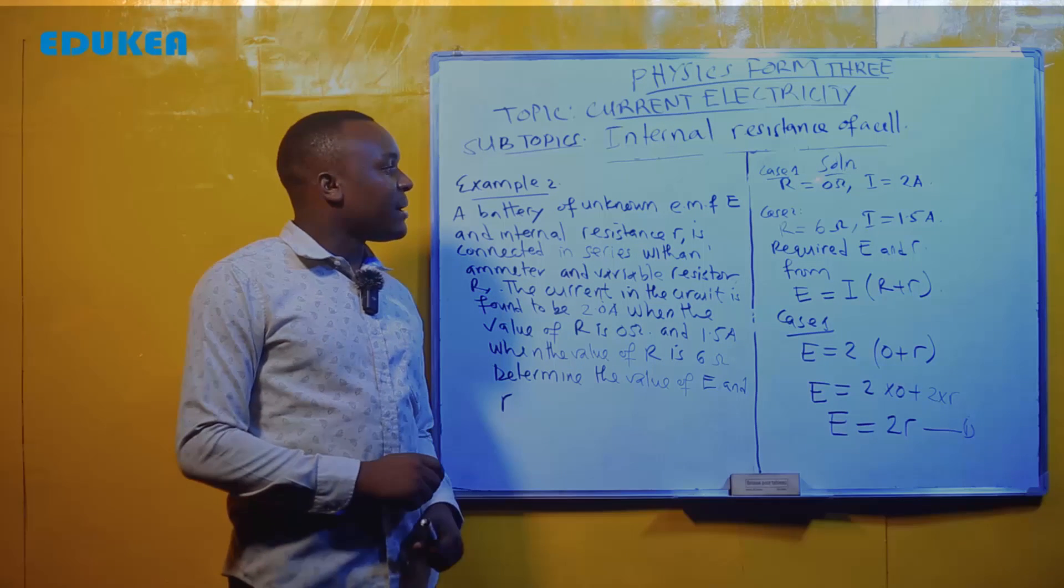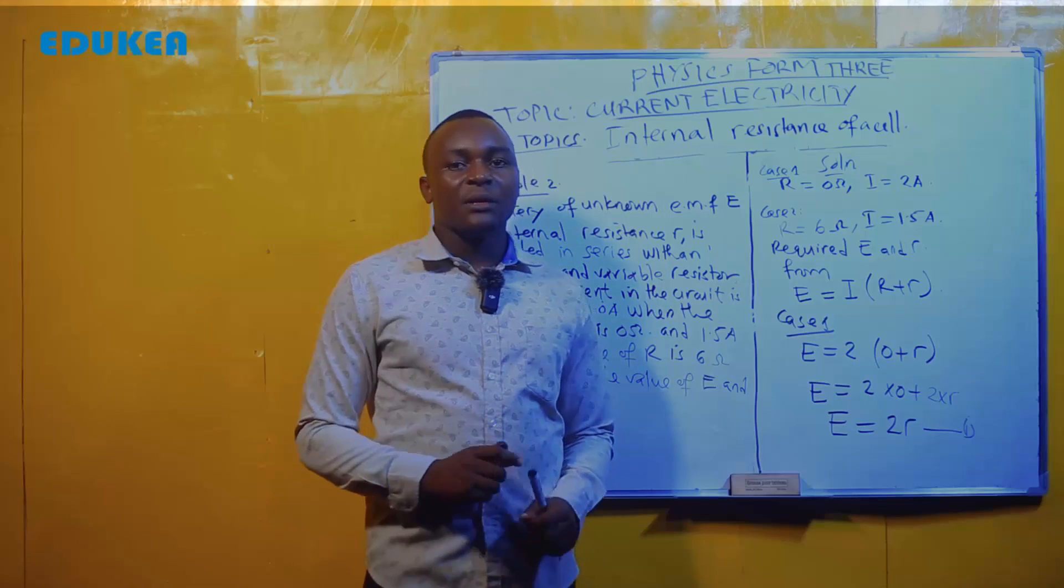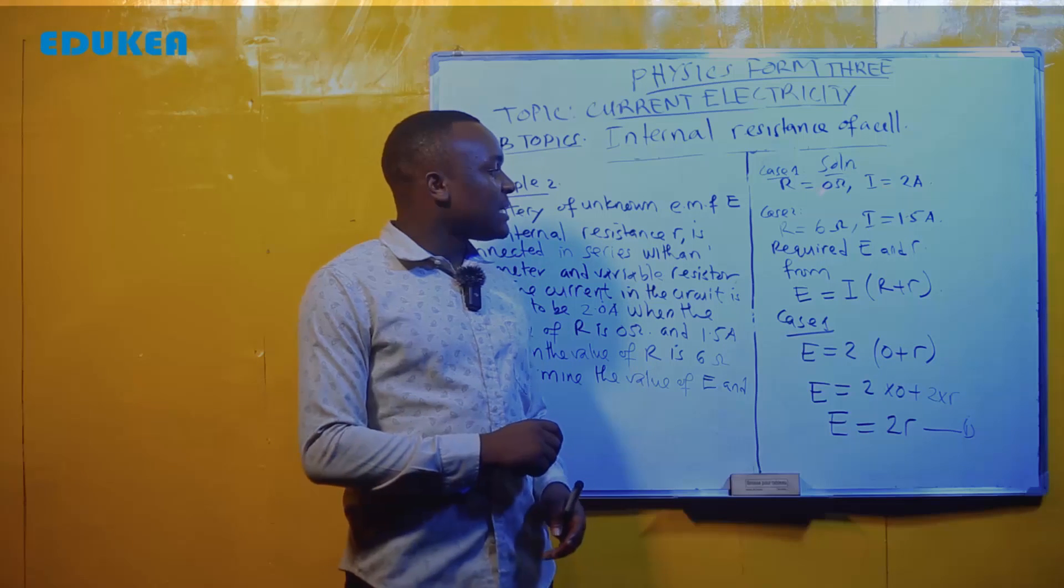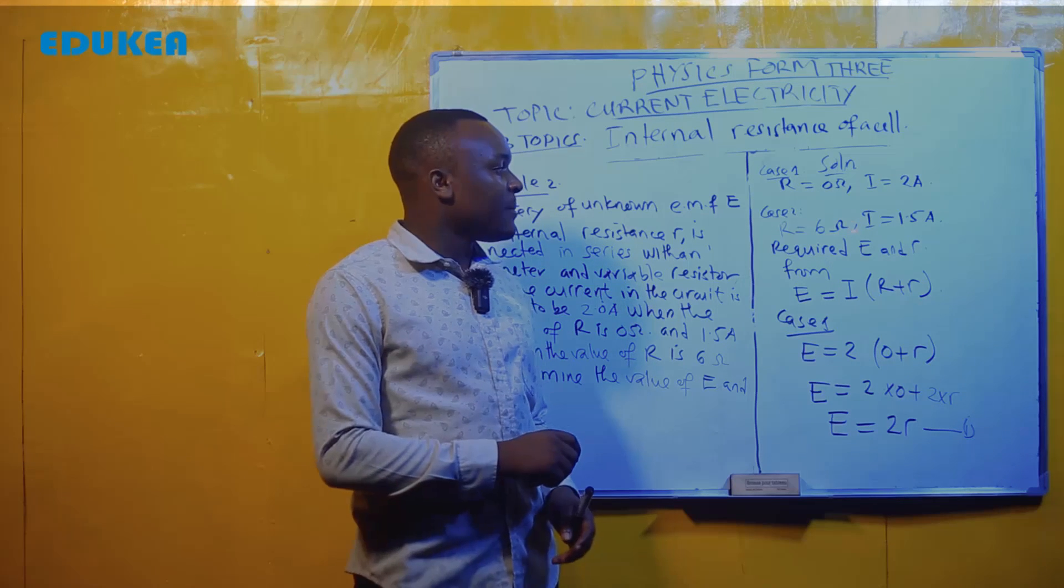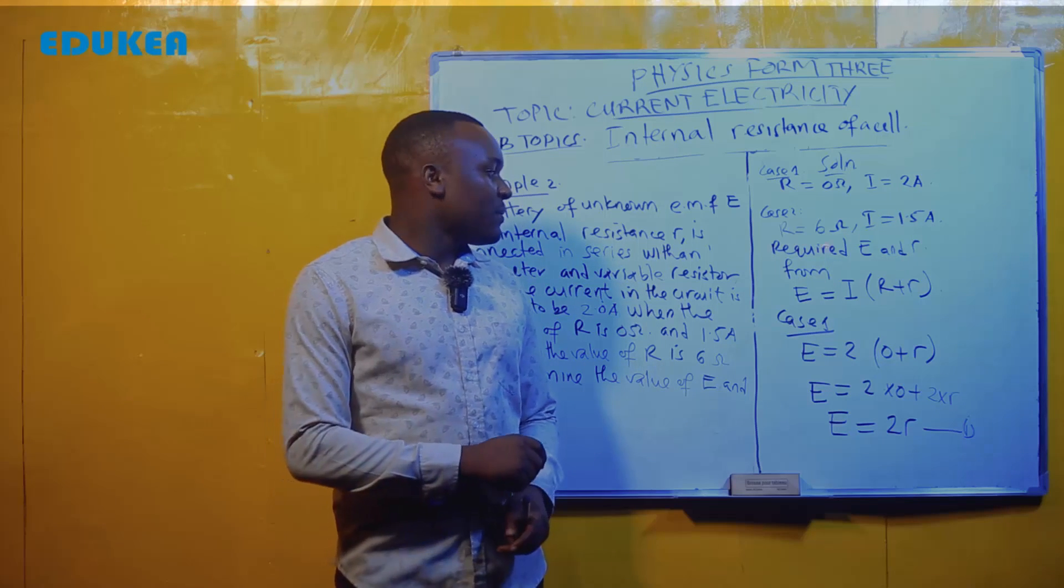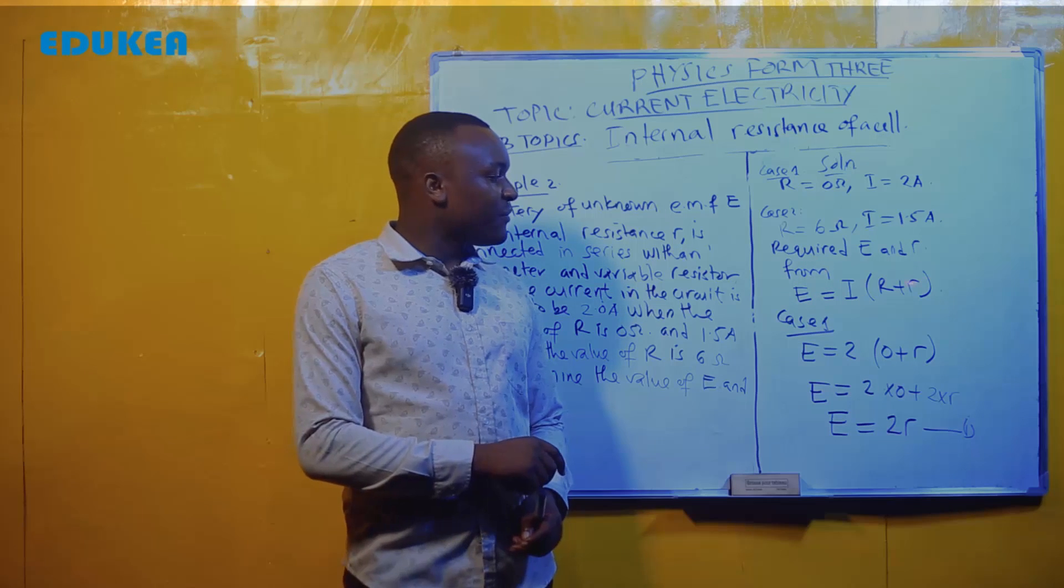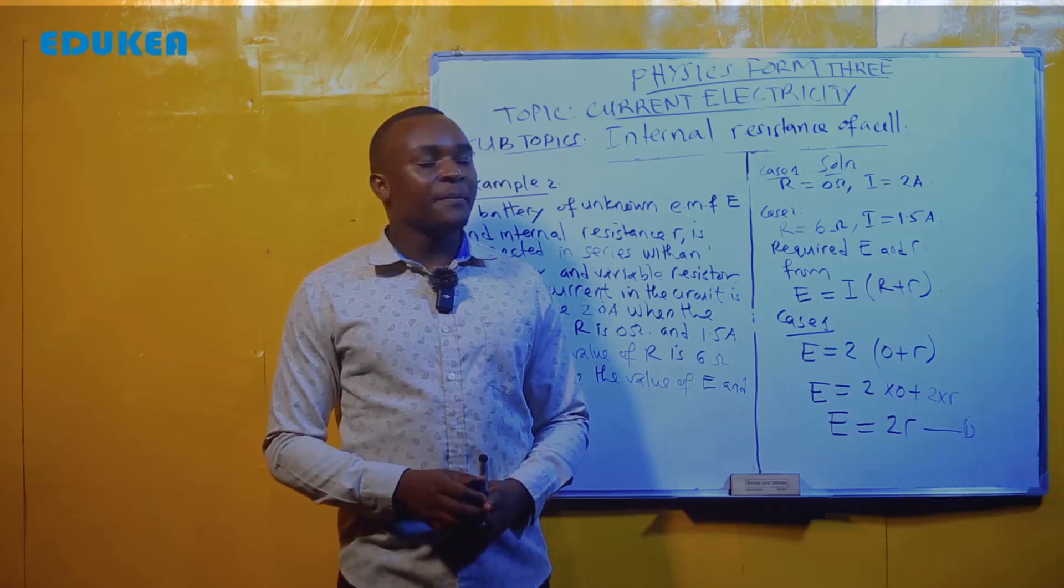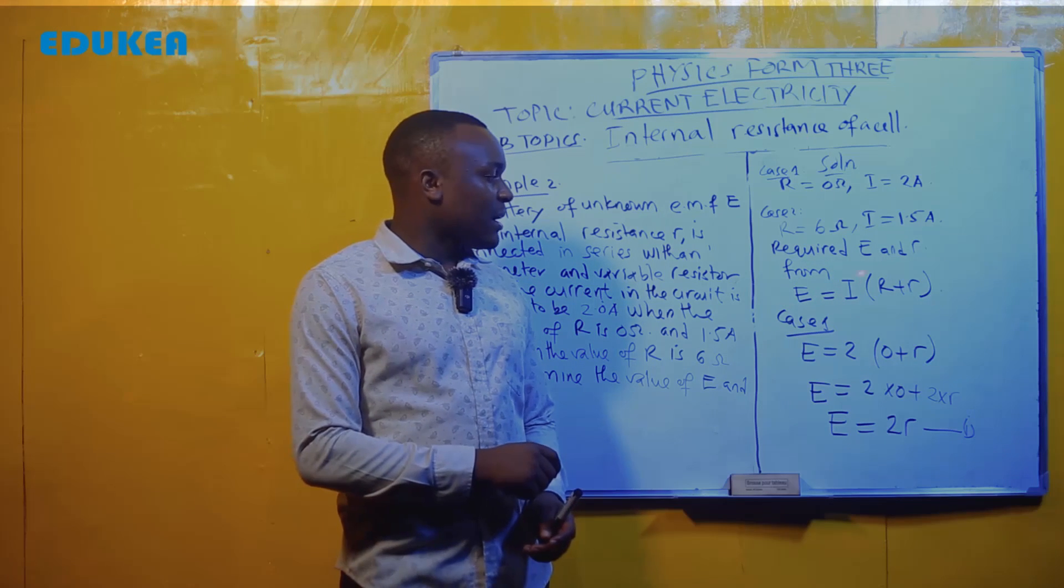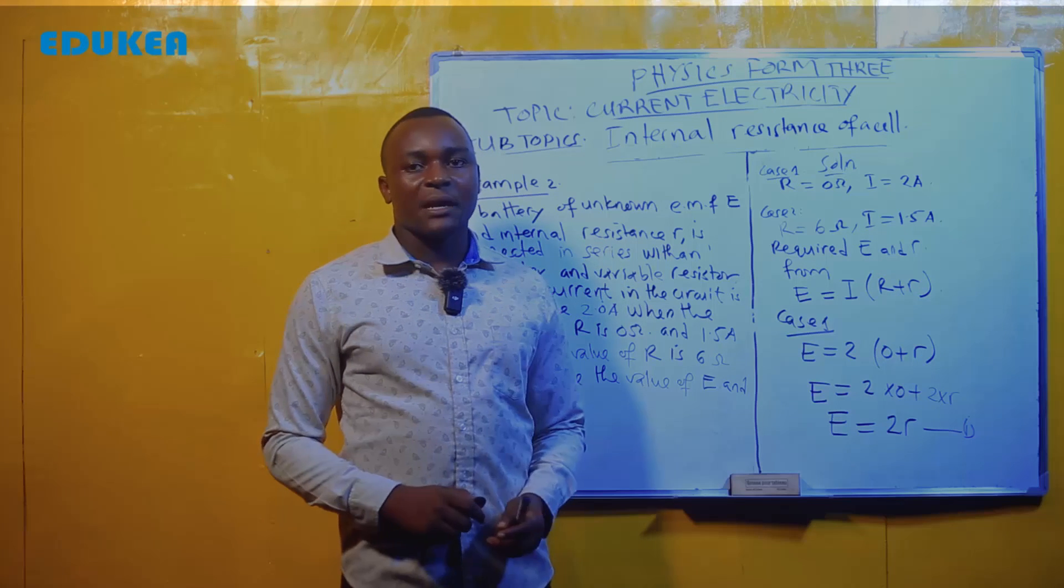Kwa kesi wa kwanza tumepewa kipindi R samani R ilikuwa ni 0 lakini umeme uliowukuna pita ilikuwa ni 2 ampere. Lakini kesi 2 tumepewa samani R sawasawa na 60 kipindi umeme wa 0.5 uliowukuna pita. Kwa hiyo basi tulisoma kwamba formula kutafuta EMF na internal resistance kwa kupitia konseptu internal resistance ni E sawasawa na I mabano variable resistor R plus internal resistor r.